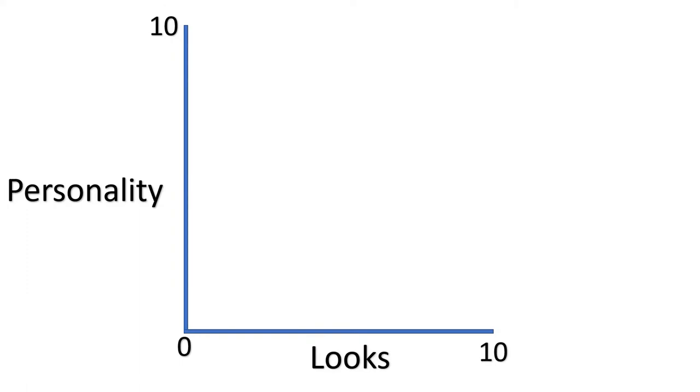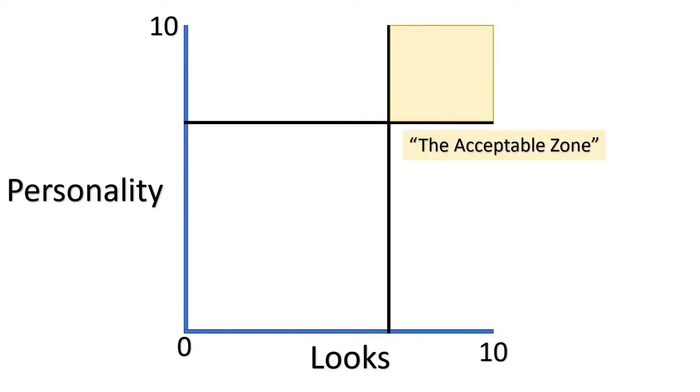And let's say a single woman won't consider a man unless he's at least a 7 on the look scale and also a 7 on the personality scale. These constraints form an area that we'll call the acceptable zone.